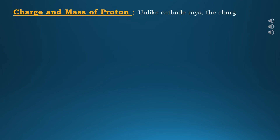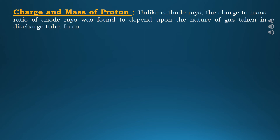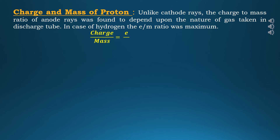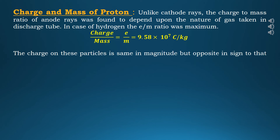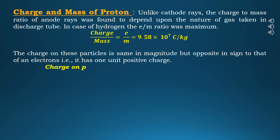Let's discuss the charge and mass of the proton. Unlike cathode rays, the charge-to-mass ratio of anode rays was found to depend upon the nature of the gas taken in the discharge tube. In the case of hydrogen, the e/m ratio was maximum. For hydrogen gas, the charge over mass ratio e/m comes out to be 9.58 × 10⁷ coulombs per kilogram. The charge on these particles is the same in magnitude but opposite in sign to that of an electron — that is, one unit positive charge. The charge on the proton, e, is equal to 1.6 × 10⁻¹⁹ coulombs, the same magnitude as the electron but positive.